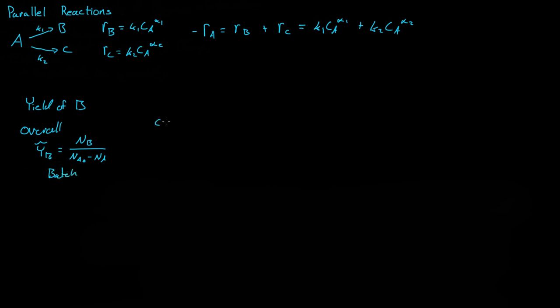For a CSTR or a plug flow reactor, the only difference is it's now the molar flow rate of B divided by the molar flow rate of A initially minus the molar flow rate of A out of the system. So that's how you calculate the overall yield for a CSTR, plug flow reactor, or any system that has moles flowing into or out of it.